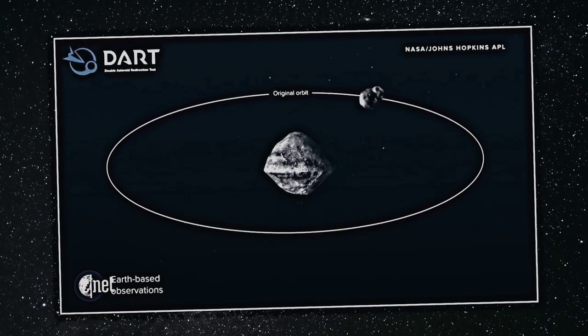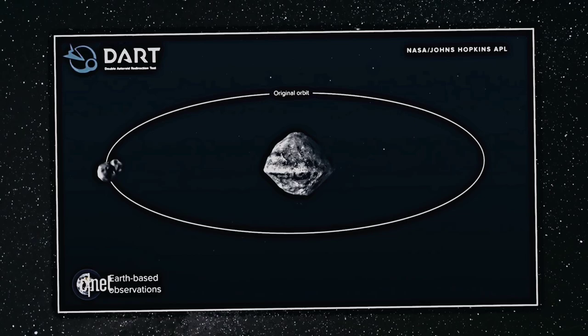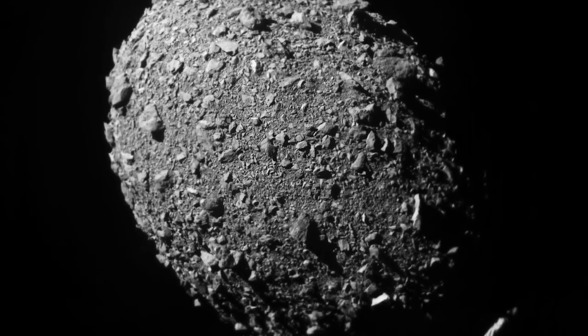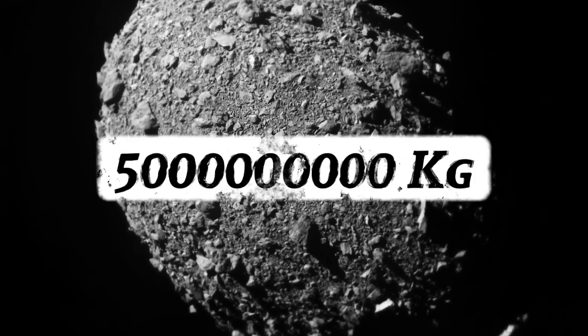Dimorphos orbits a planet five times its size, making it a small moon. While it's smaller than our moon, its weight is incredibly heavy, about 50 billion kilograms.